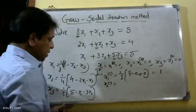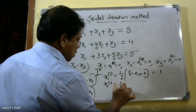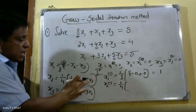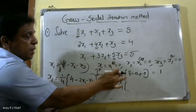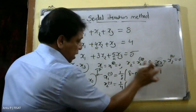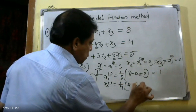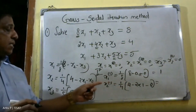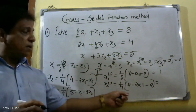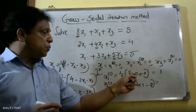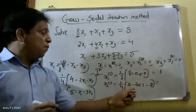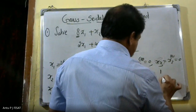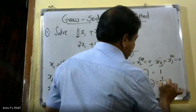Now x2 raised to 1: using (1/4) into (4 minus 2x1 minus x3). In the Gauss-Seidel method, we use the latest updated value of x1, which is 1. So: (1/4) into (4 minus 2 times 1 minus 0) equals (1/4) into 2, which gives x2 raised to 1 equals 0.5.